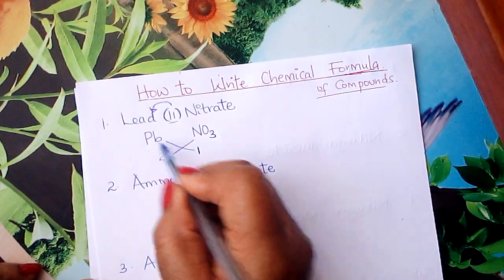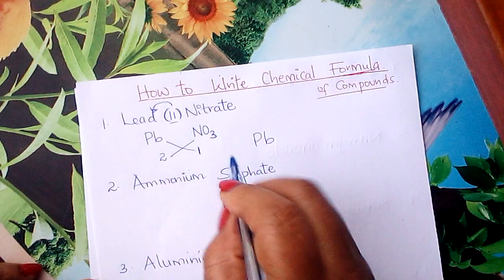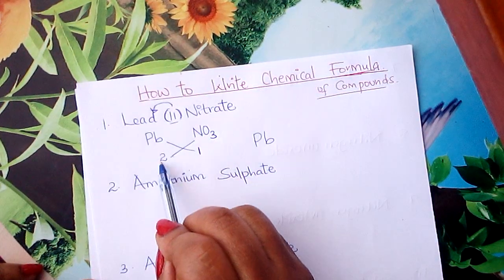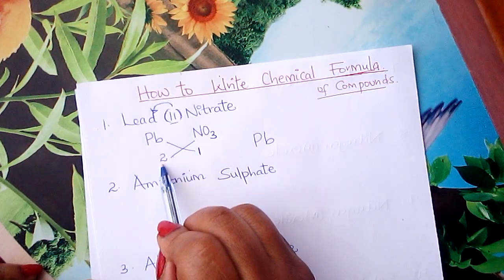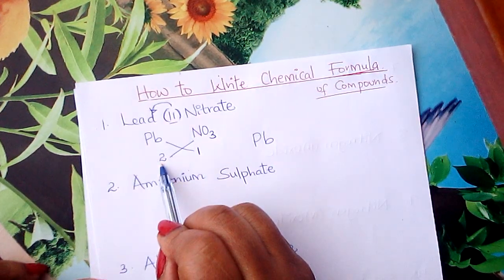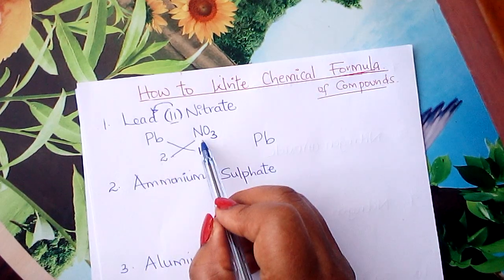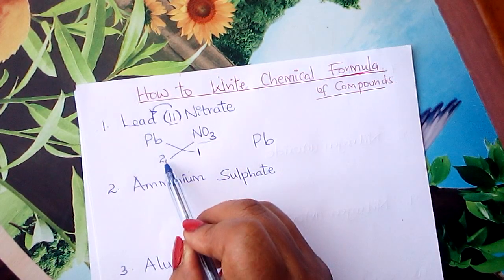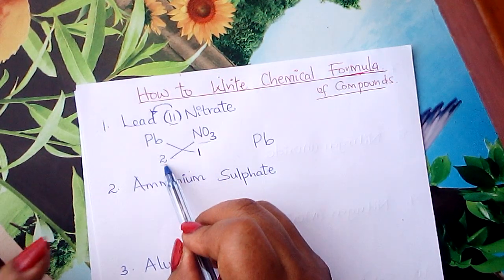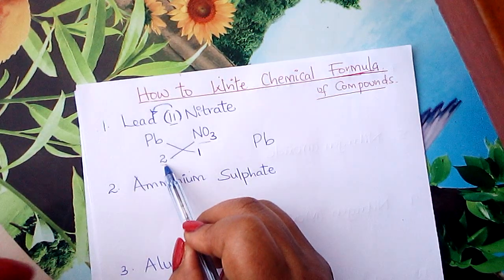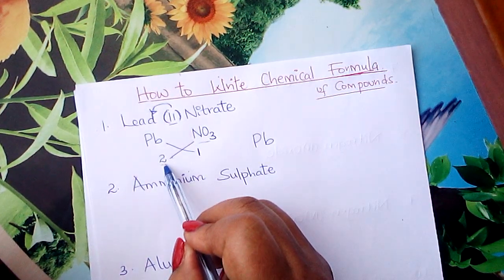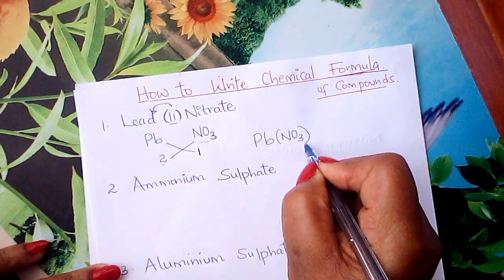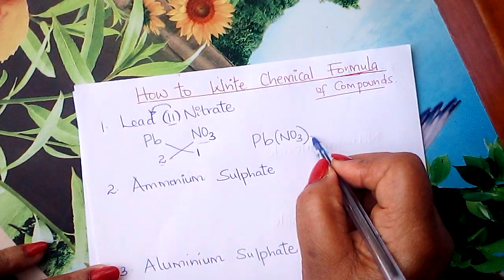Interchange, learner. So Pb goes with 1. Nitrate is a radical. If a radical takes more than 1 valency, you put it in bracket. If a radical like NO₃ takes more than 1 — like now this is 2 — if it takes 2, 3, 4, and so on, you put that radical inside the bracket and you put this number down here.